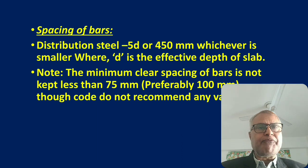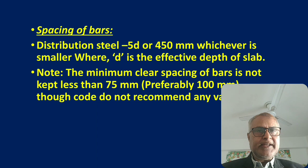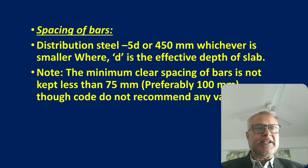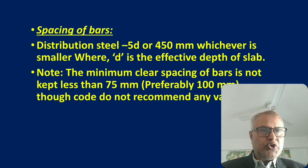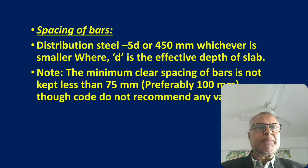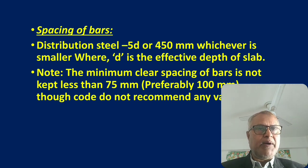Now, spacing of bars. When the slab is complete, we place the reinforcement — main bar or distribution bar — at a certain distance, parallel to the width and parallel to the length of the slab. The distribution bar spacing should be 5D minimum or 450 mm, whichever is smaller, where D means the effective depth.